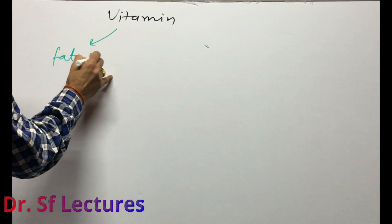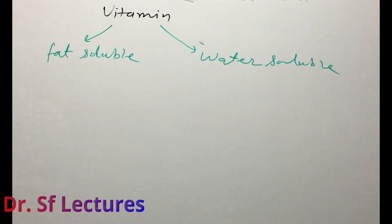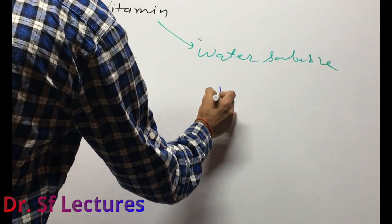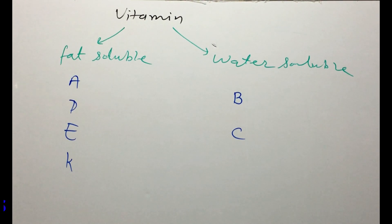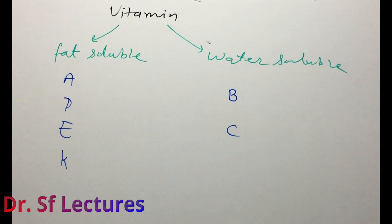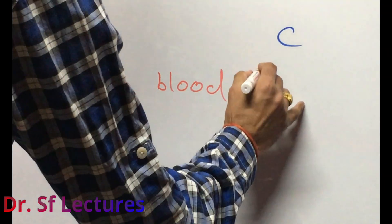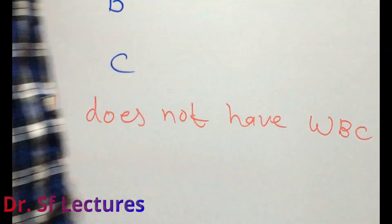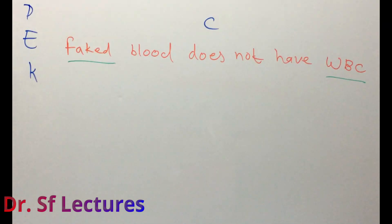Vitamins are basically of two types: fat-soluble and water-soluble. Fat-soluble vitamins are A, D, E, and K. Water-soluble vitamins are vitamin B and vitamin C. To help remember which is which, I am writing a sentence: 'Fat Blood Does Not Have WBC.' We consider only two key words — Fat and WBC.